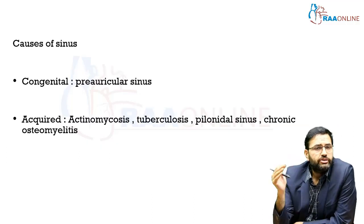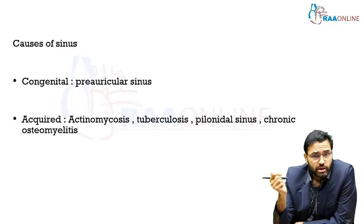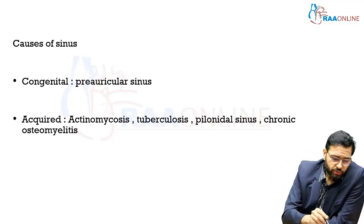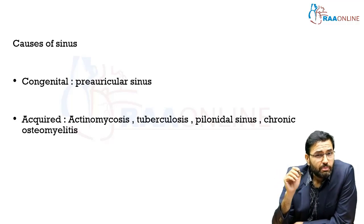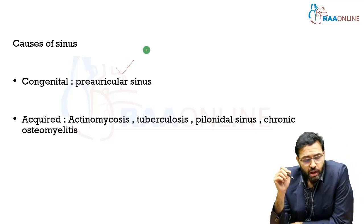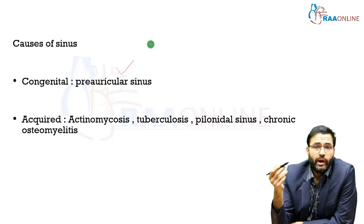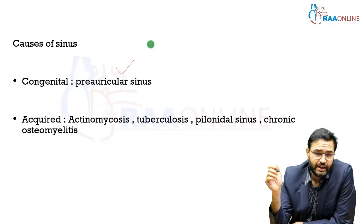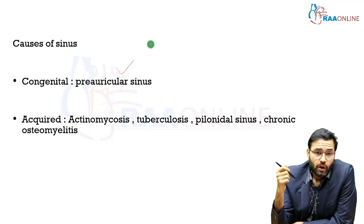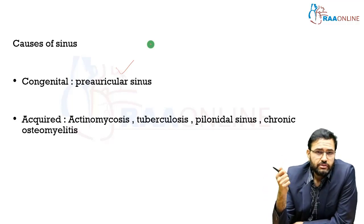What are the various causes of sinuses? A sinus can be congenital or acquired. The most common congenital sinus we encounter is a preauricular sinus. The more common acquired sinuses, especially in India, are tuberculous in nature, or could be due to actinomycosis, pilonidal sinuses, or chronic osteomyelitis.